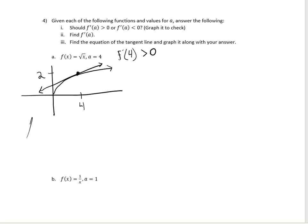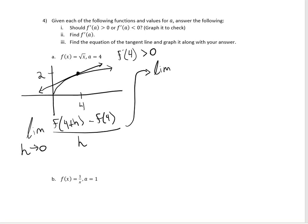Now I'm going to use the limit definition. So I'm going to have f of 4 plus h minus f of 4 divided by h. That will give me the limit as h approaches 0 of the square root of 4 plus h — remember, whatever is in between these parentheses for f gets plugged in for your x value — minus f of 4, so the square root of 4 is 2, so it will be minus 2, divided by h.